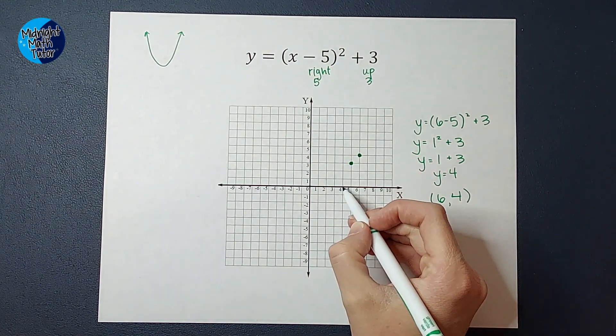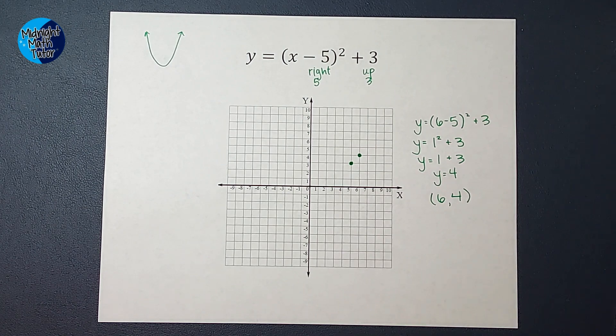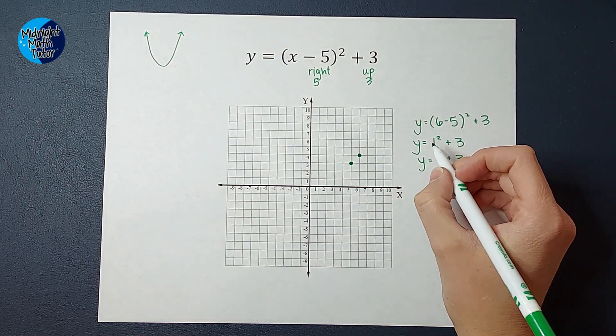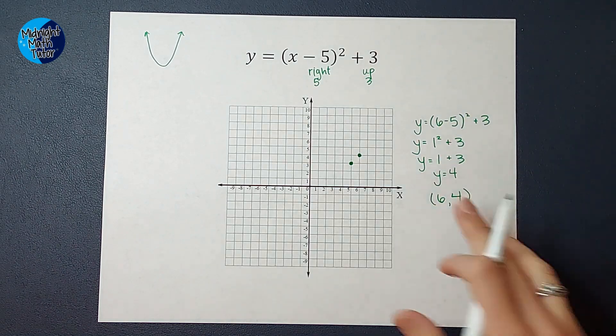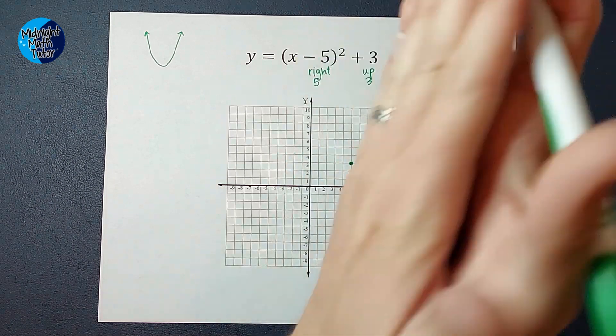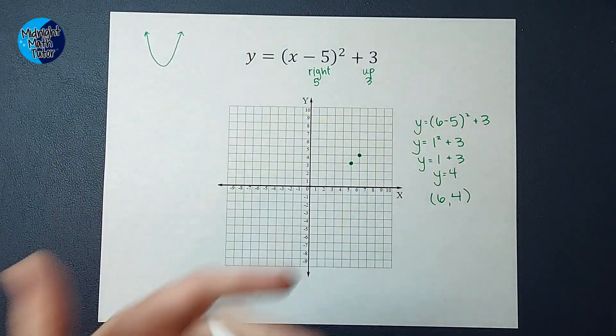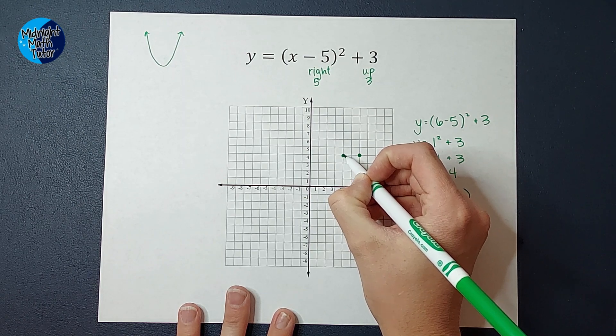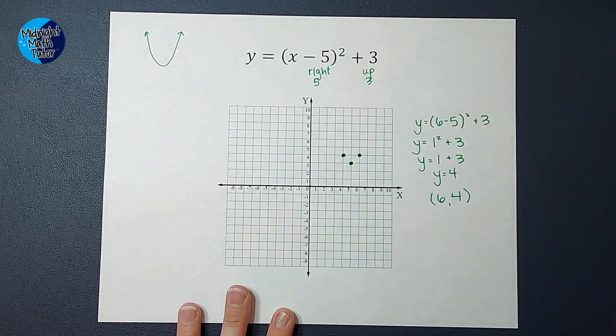Now I could plug in four, but guess what? If I plug in four, I'd put it here, I'd get four minus five, I'd get a negative one. Negative one squared gives me one, one plus three gives me four. So parabolas are symmetrical. So if there's one there, I know it's also going to be here, kind of like there's a mirror right there.